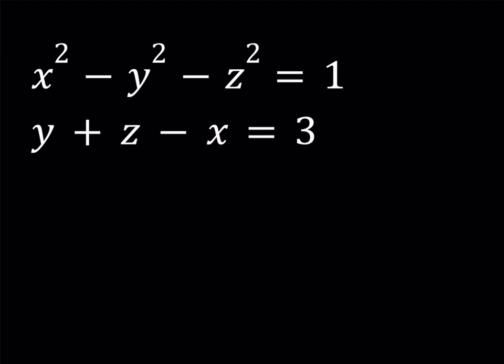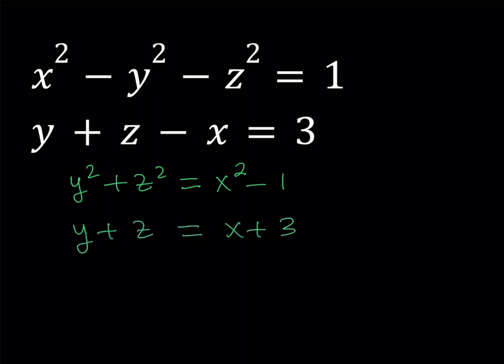From the first equation, I'd like to put y squared and z squared on the same side and make them positive. So let's go ahead and rearrange so that y squared plus z squared is equal to x squared minus 1. That's my first manipulation. For the second one, I'd like to isolate y plus z, so I'll add x to both sides, giving me y plus z equals x plus 3.